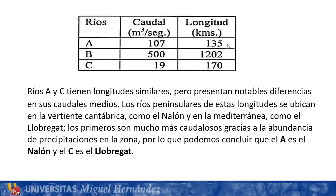Rivers A and C have similar lengths: A is 135 kilometers, C is 170. But as we can see, they present notable differences in their average flows: 107 for A and 19 for C. Peninsular rivers of these lengths are located either on the Cantabrian slope — as is the case of the Nalón — or on the Mediterranean slope — as is the case of the Llobregat. The Cantabrian rivers are much more water-bearing thanks to the abundant rainfall in the area. We can therefore conclude that river A is the Nalón and C is the Llobregat.